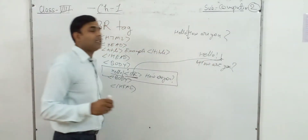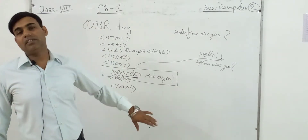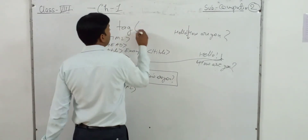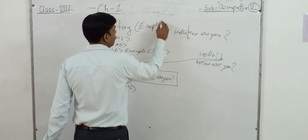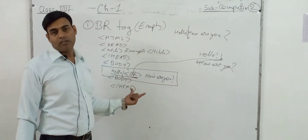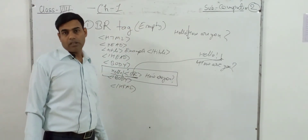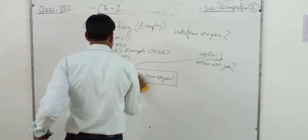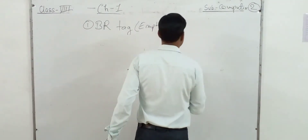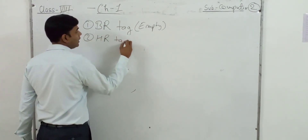The BR tag is an empty element, meaning it has only an opening tag and no closing tag. That is why we know it is a break tag and it is an empty element. After the BR tag, we have one more tag — the HR tag. HR tag is also an empty tag. The full form of HR is Horizontal Rule.